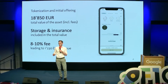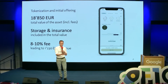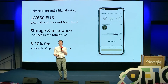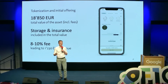The total asset value consists of mainly three elements: the purchasing price of the cask, the total cost for insurance and storage over the whole investment horizon, and our fee, which is usually between 8 and 10% of the purchasing price of the cask — in this specific case leading to a bit more than 1,200 euro of revenue for us.